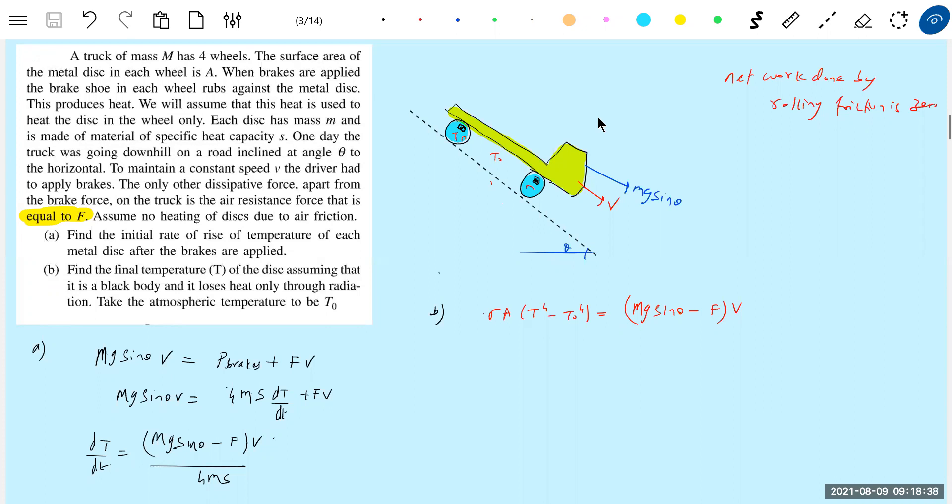I don't know what is divided by four. Oh here, here, this one. No, find the final temperature of the disk, assuming that it is a black...